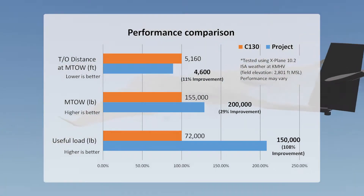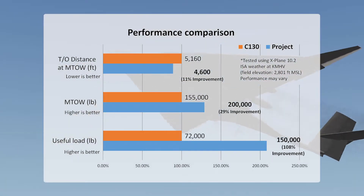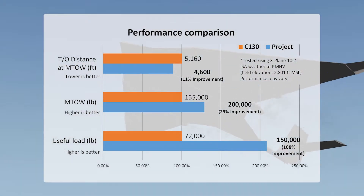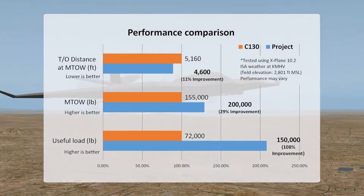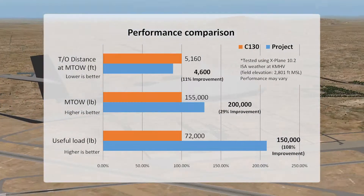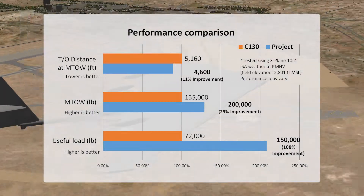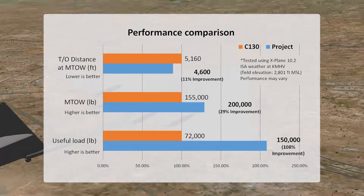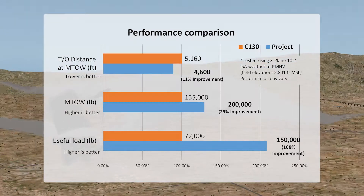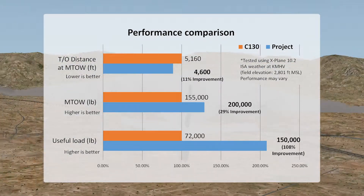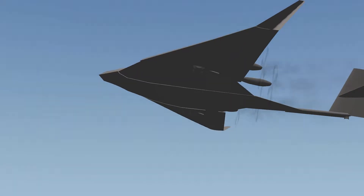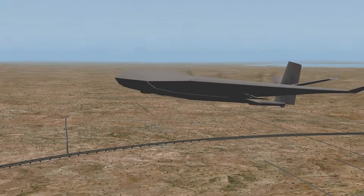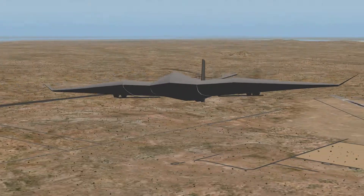What does all that mean? That means performance improvement. The maximum takeoff weight is increased while the empty weight is reduced — this doubled the useful load compared to the C-130. However, the takeoff performance is also improved: the takeoff distance is reduced by 11% even at higher weight. Still, there's room for improvement. The performance could be further improved by the use of newer, better airfoils, a trade secret for most aircraft manufacturers.